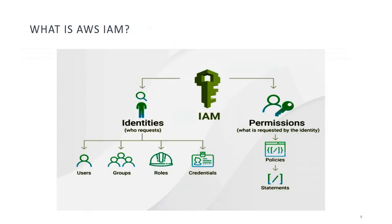What is AWS IAM? AWS IAM, or Identity and Access Management, is a service that allows you to manage access to AWS services and resources. You can use IAM to create and manage users, groups and roles, and to control who can access specific resources in your AWS environment.